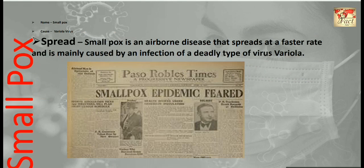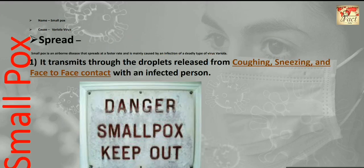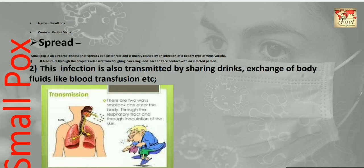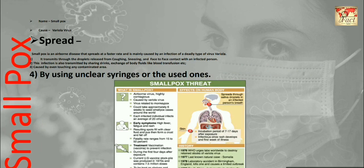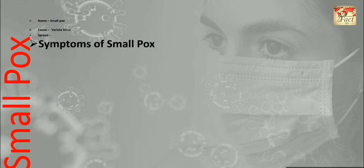Smallpox is an airborne disease that spreads at a faster rate, mainly caused by infection of the Variola virus. It transmits through droplets released from coughing, sneezing, and face-to-face contact with an infected person. Second, it is also transmitted by sharing drinks and exchange of body fluids like blood transfusion. Third, it can be caused by contact with any contaminated area. Fourth, by using unclean or previously used syringes.